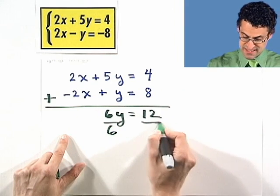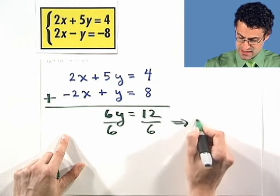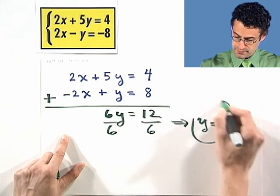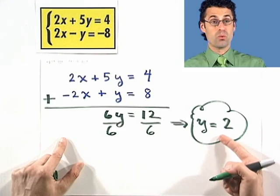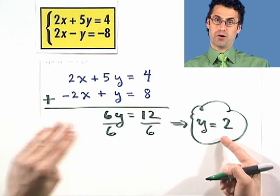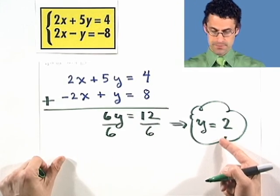Now I can just divide both sides by 6. I see that y has to equal 2. So I know y equals 2. Now I've got to find the partner x that goes along with that y.